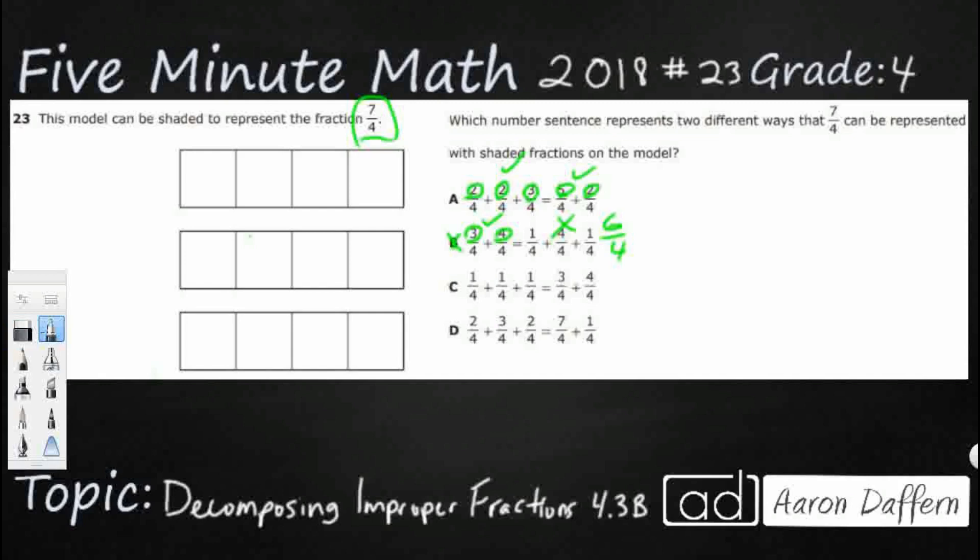Let's check C. I can already tell you, look at this first part of C. 1 fourth plus 1 fourth plus 1 fourth. Yeah, 1 and 1 and 1 do not make 7. They only make 3. So that is incorrect.